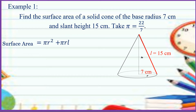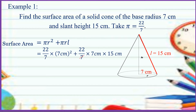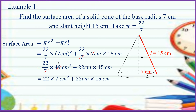The surface area is equal to pi R squared plus pi R L. Substituting the values, we have 22 over 7 times 7 cm squared plus 22 over 7 times 7 cm times 15 cm. Simplifying, we can cancel 7 and 7, then multiply 22 over 7 times 49 square cm plus 22 cm times 15 cm. Cancelling 7 gives us 22 times 7 square cm plus 22 cm times 15 cm.